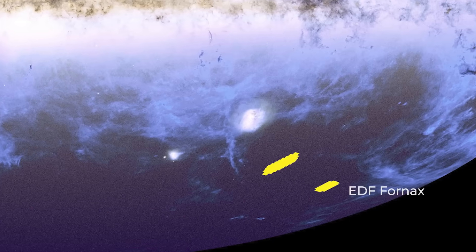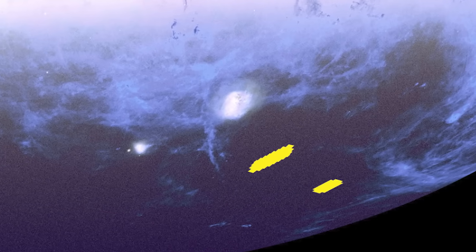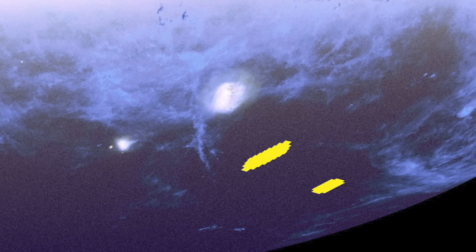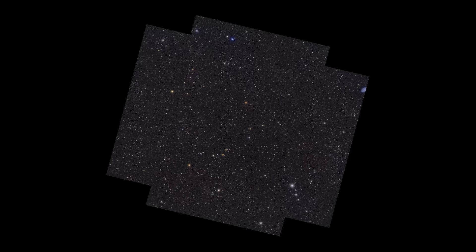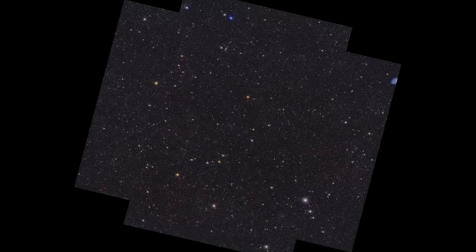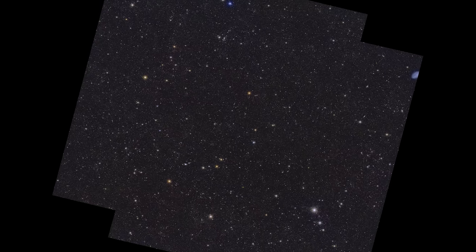The Fornax field spans about 10 square degrees and is located in the southern constellation Fornax. Though slightly smaller in area than the other deep fields, this region is a scientific gold mine.